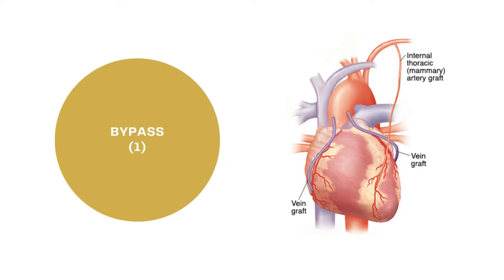Today we are looking at the root operation bypass, which carries a character value of one. Root operations are the most important aspect of building an ICD-10 PCS code. You always have to think about a root operation in terms of what is the goal or objective of the procedure. If you can understand the goal or objective of the procedure, you will get the correct root operation. Read the definitions of the root operations and compare them to the procedure performed so that you get the correct root operation for each procedure.